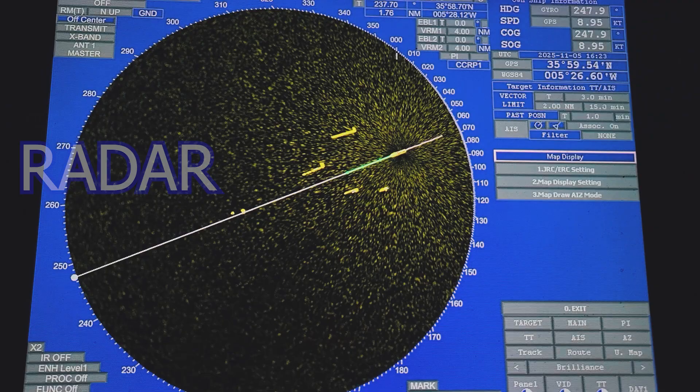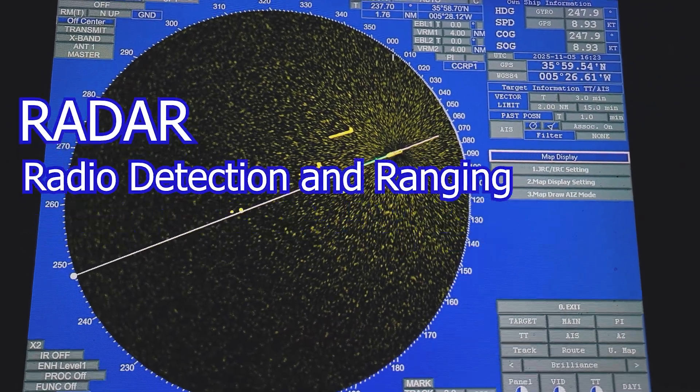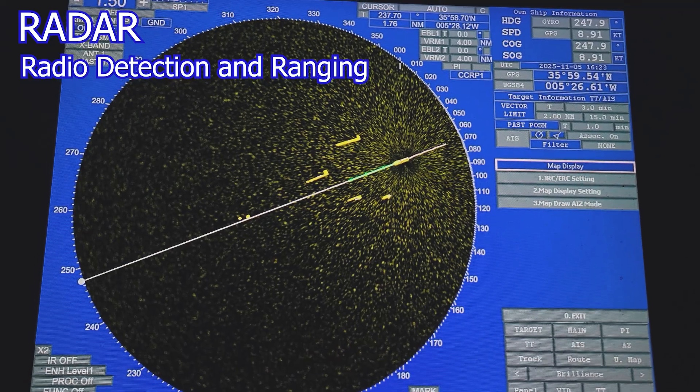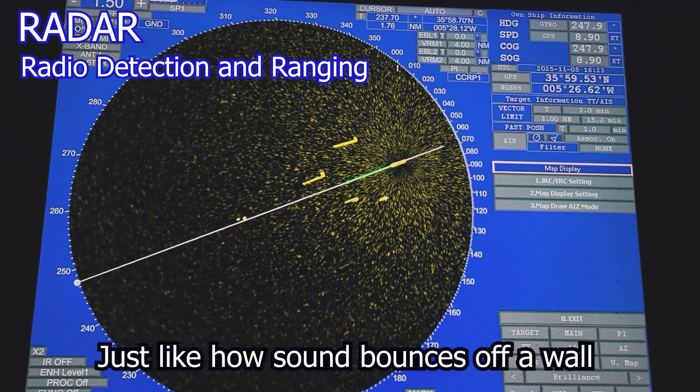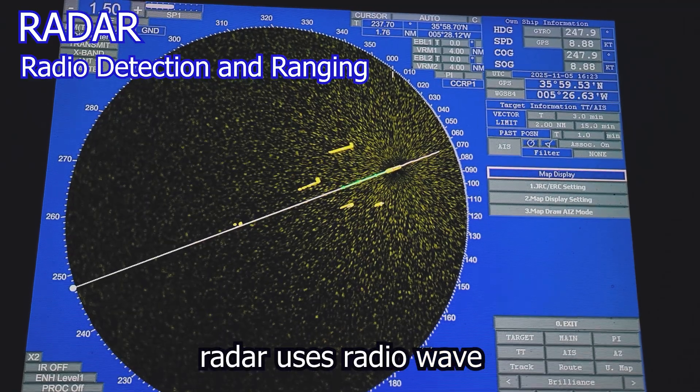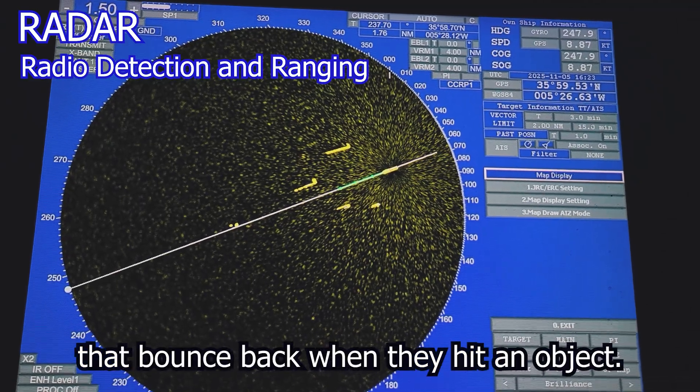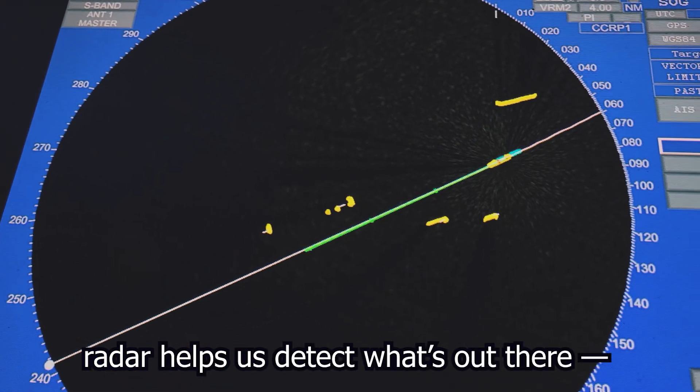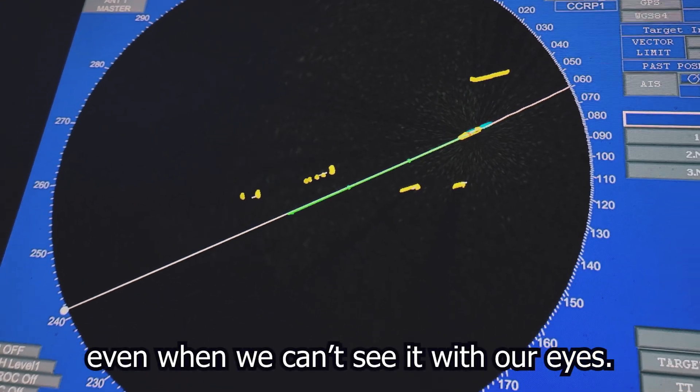The word radar stands for radio detection and ranging. It sounds technical, but the concept is simple. Just like how sound bounces off a wall and creates an echo, radar uses radio waves that bounce back when they hit an object. By listening to those echoes, radar helps us detect what's out there even when we can't see it with our eyes.